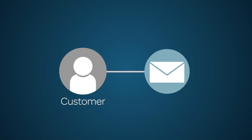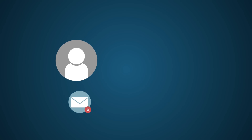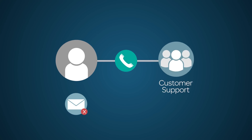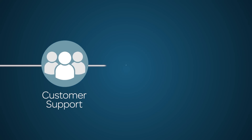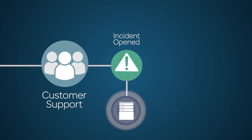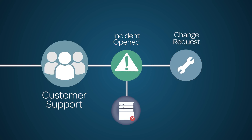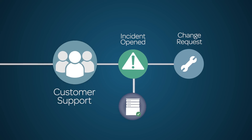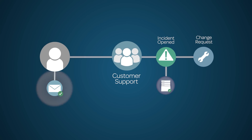A customer reports that email is down. The customer calls Support to report the issue, and an incident is created. After some troubleshooting, Support determines that one of the customer's email servers is down. It looks like the downed email server needs to be rebooted, so a change request is created. When the email server has been rebooted and the email issue is validated as resolved on the customer end, the incident is closed.